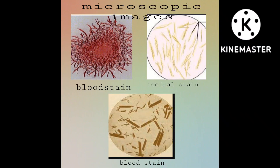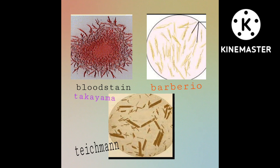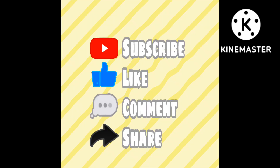Here are three microscopic images. The first image is of a blood stain, the second is of a seminal stain, and the third shows rhombic shaped crystals which can appear in both blood stain and seminal stain tests. The pink feathery crystals are from Takayama's test (blood stain). The yellow needle-shaped crystals are from Barberio's test (seminal stain). Brown rhombic crystals in blood stain context indicate Teichmann's test; in seminal stain context, they indicate Florence test for choline. Remember these images and names.